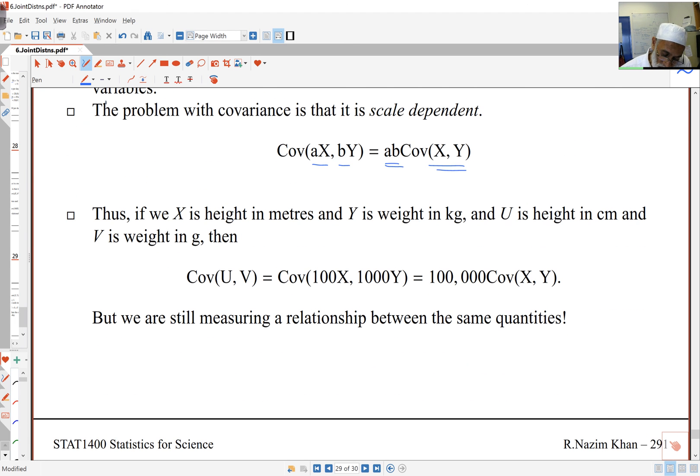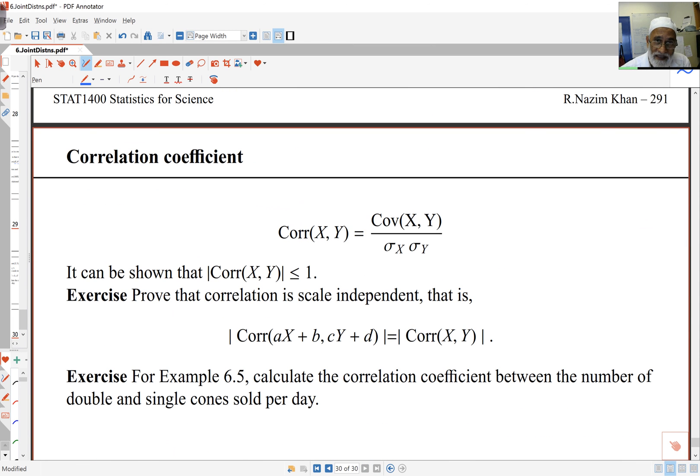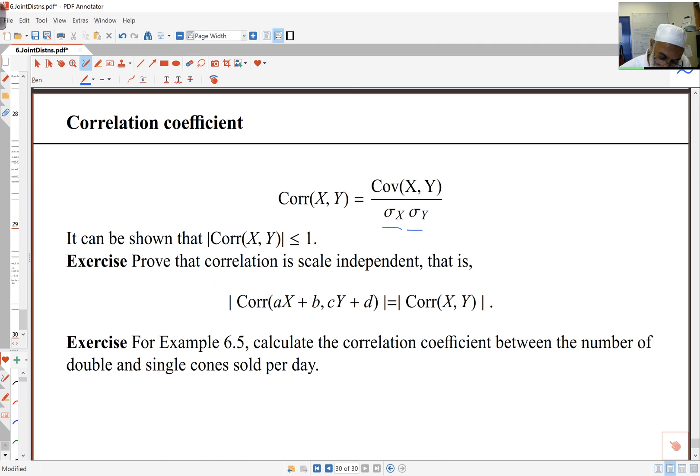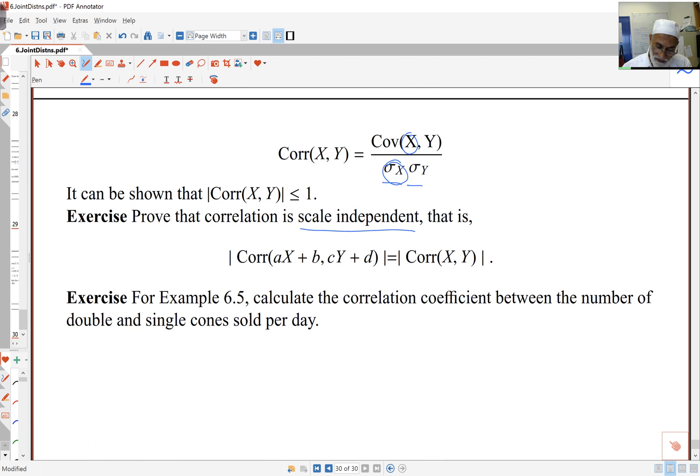The better one is to use correlation, which adjusts for my variances. You can see that if I scale things, it makes no difference. You can check that yourself. Because if I scale the x's, then this also scales, and those things cancel off. So correlation is scale independent, and that's why it's a better measure. The other thing with correlation is it can't be less than negative 1 and bigger than 1. It lies always between negative 1 and 1. We'll see this later on when we start looking at relationships between variables.